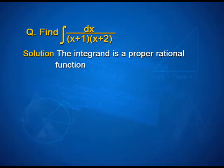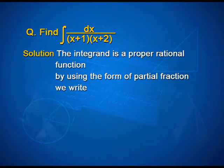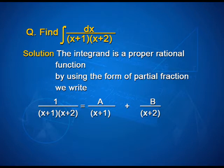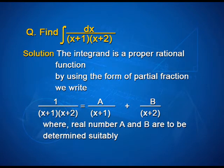Find integral dx upon (x+1)(x+2). For the solution, we can see the integrand is a proper rational function. Therefore, by using the form of partial fraction, we write 1 upon (x+1)(x+2) as A upon (x+1) plus B upon (x+2), where real numbers A and B are to be determined suitably.